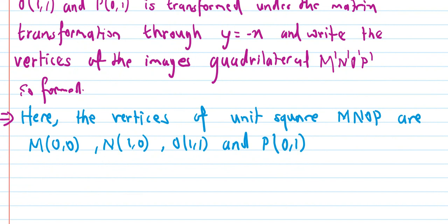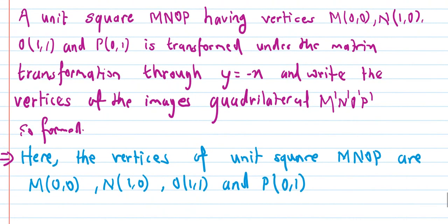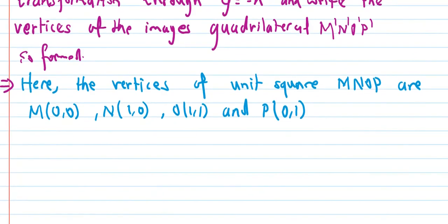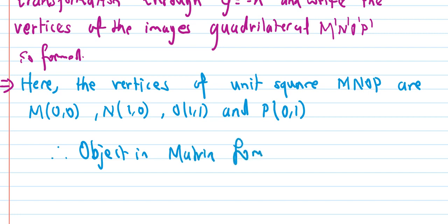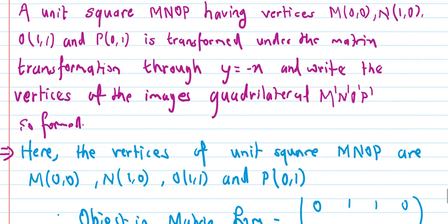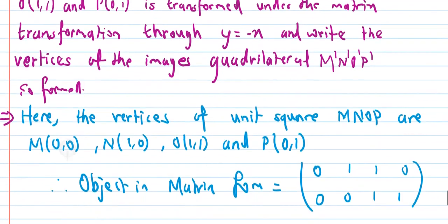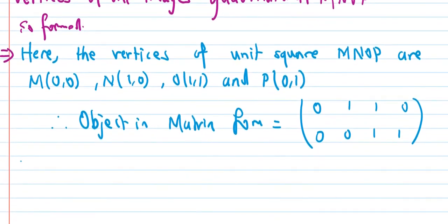Then, the object in matrix form. The object MNOP in matrix form is written as the matrix with columns: (0,0), (1,0), (1,1), (0,1).